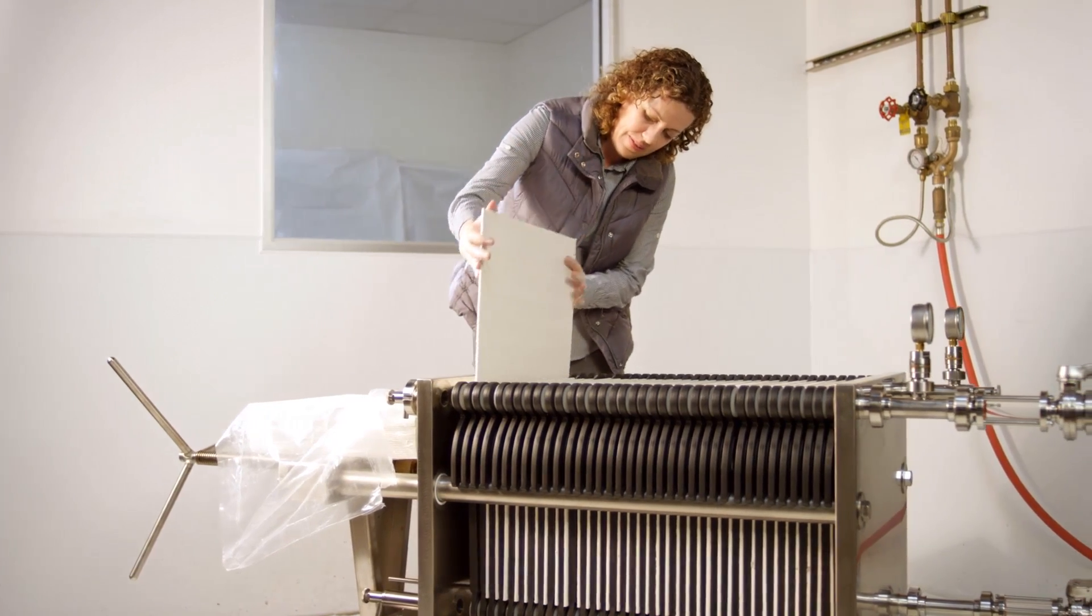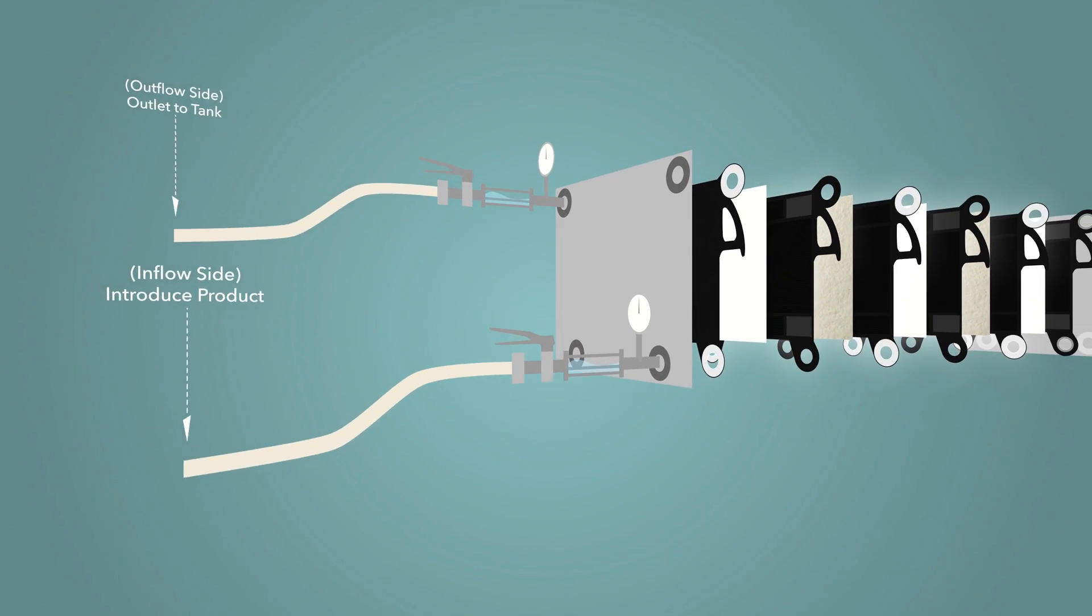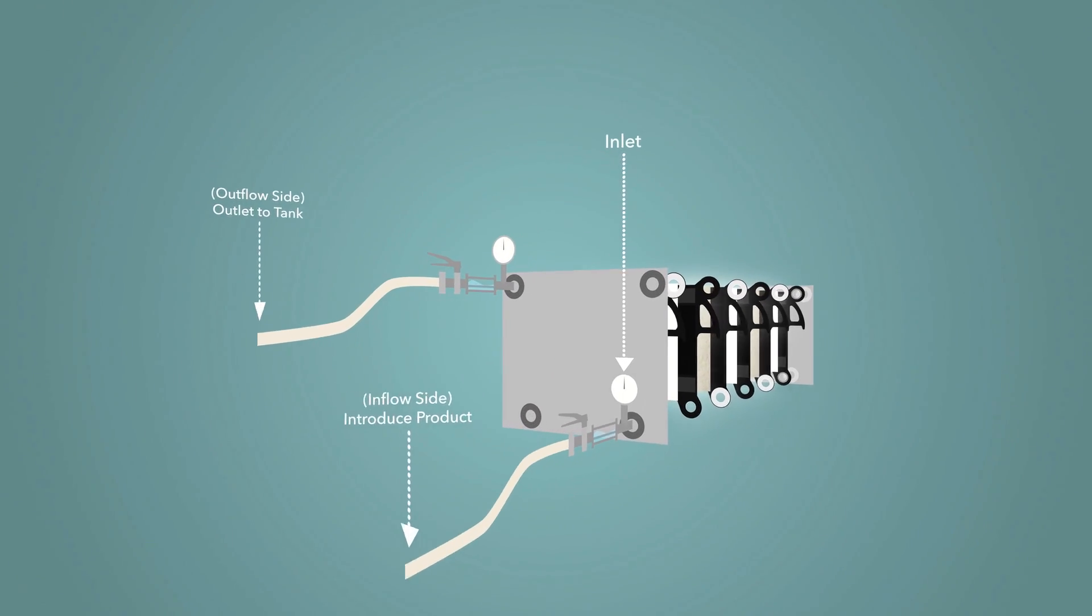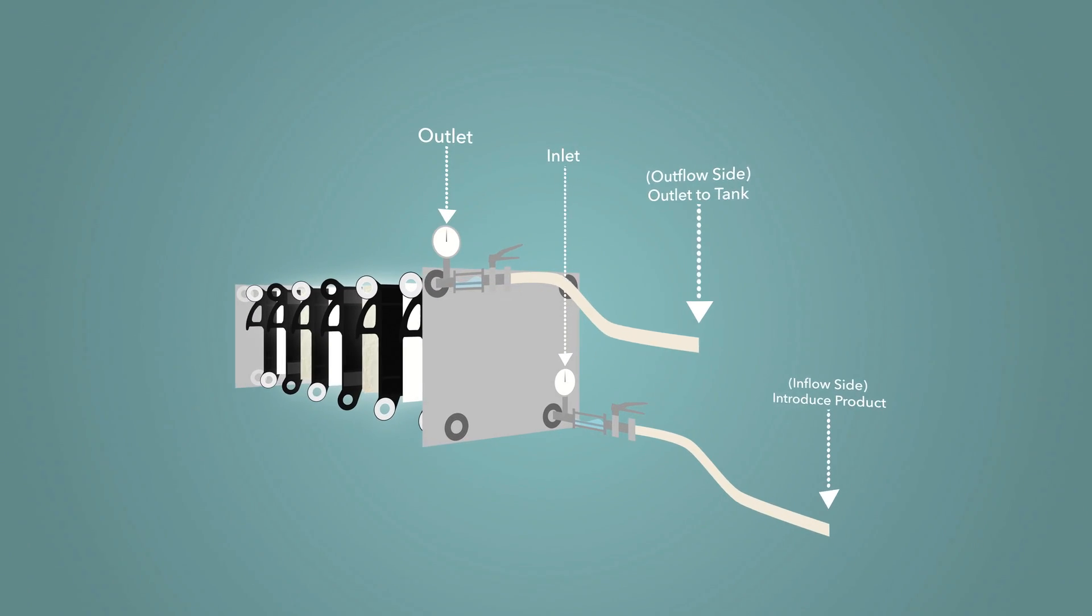After inserting one sheet between each plate, lightly tighten the filter using the spindle or other tightening device. In a standard filtration, the product inlet is commonly situated at the bottom right port. The product outlet is located at the top port.